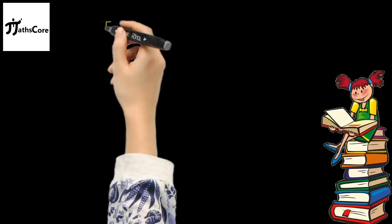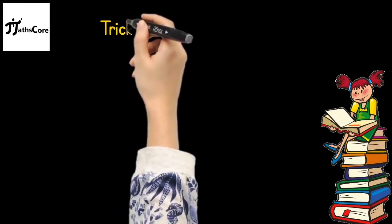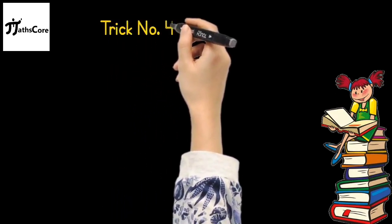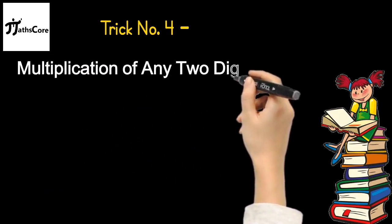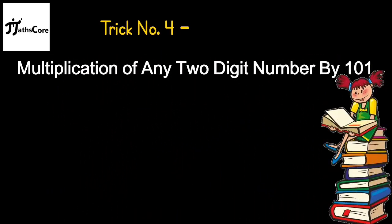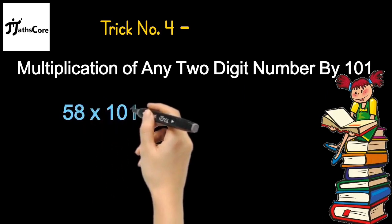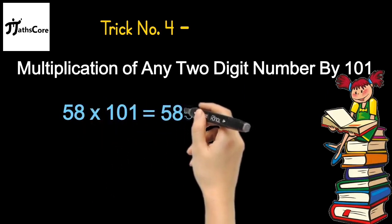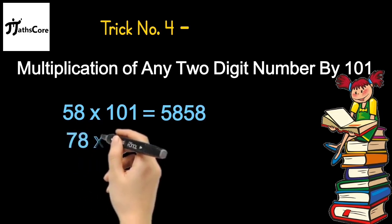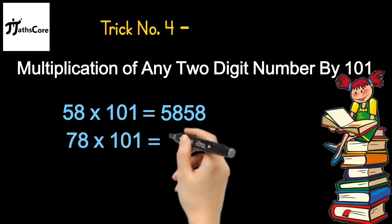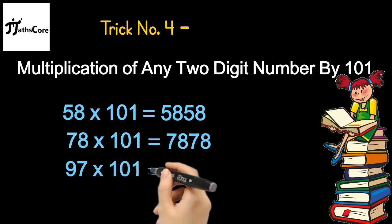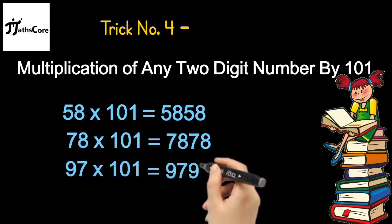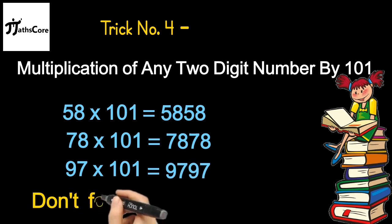Now it's time to learn the last very quick and very easy trick number 4. That is multiplication of any 2 digit number by 101. So example is 58 multiplied by 101. Answer is 5858. 78 multiplied by 101 is 7878. And 97 multiplied by 101 is 9797. See, you got the answer within 1 second. Is that amazing?